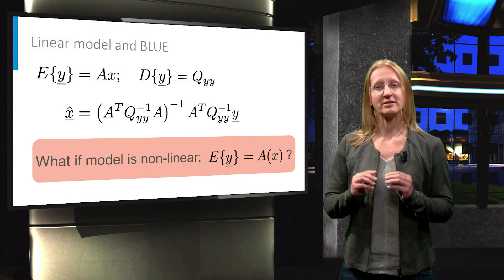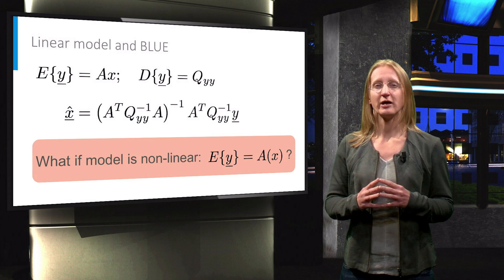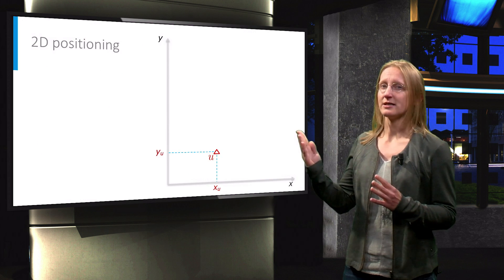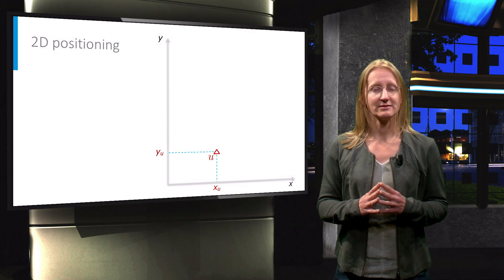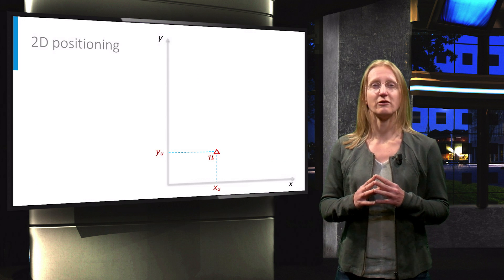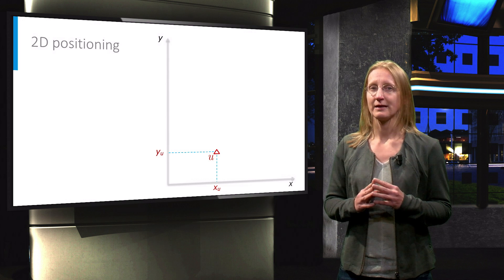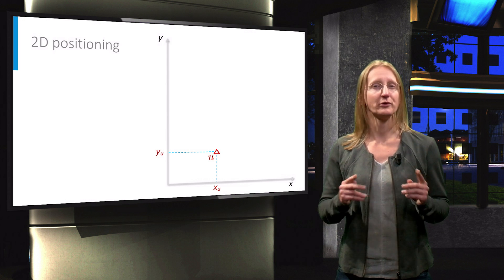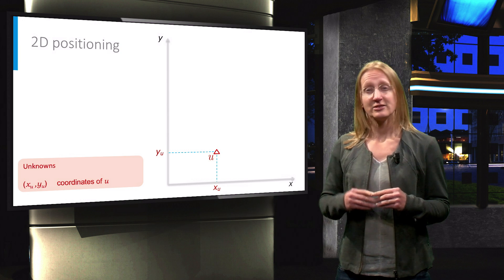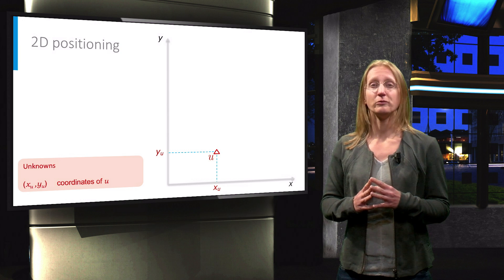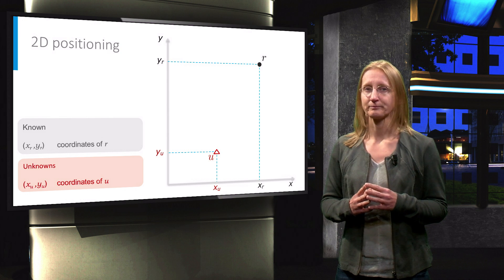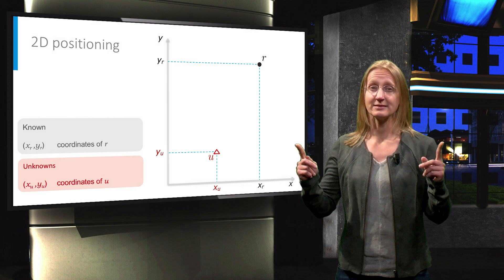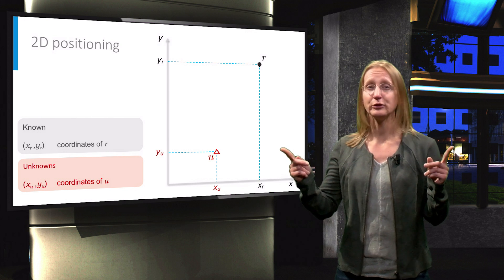For the first example we will look at a two-dimensional positioning problem. In this example we are only interested in the horizontal position of a target u. Hence, the unknowns in this case are the coordinates of point u. Let's furthermore assume that we know the coordinates of another point r, and the observation that we will take is the distance between the two points r and u.